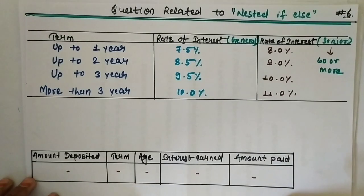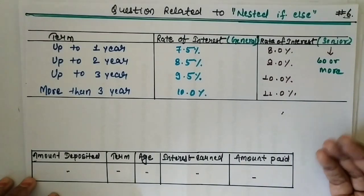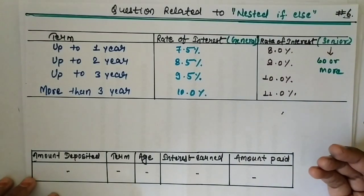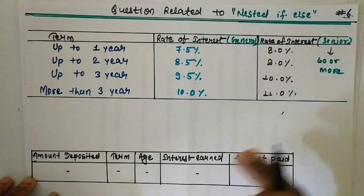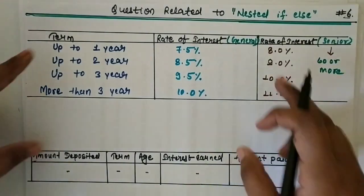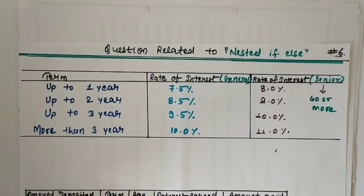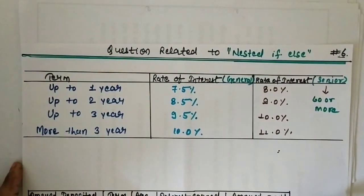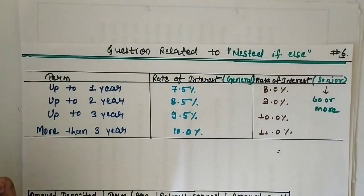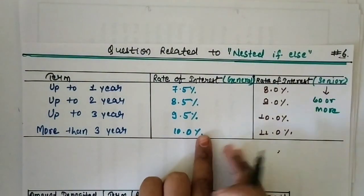This program is bank-related. Suppose you go to a bank and you have to deposit some money. You want to know how much interest you will get on that deposit. The bank has put up a chart so that you don't have to worry. The interest rate is divided into two parts.